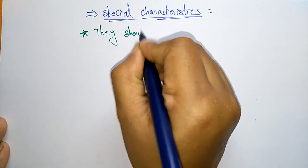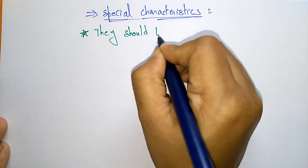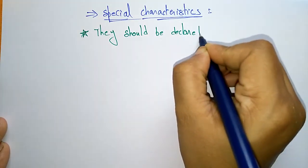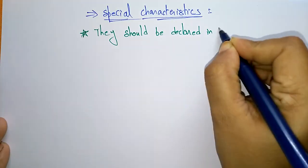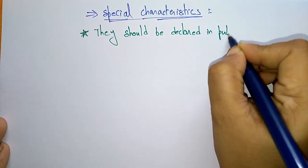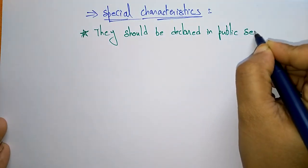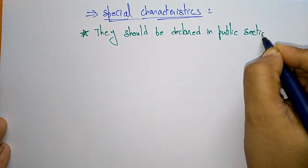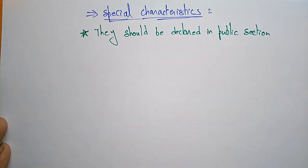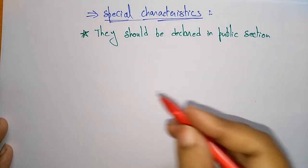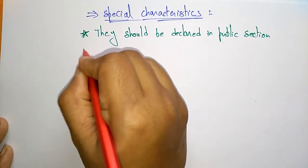The first characteristic is that constructors should be declared in the public section. If you want to declare a constructor, note that it must be declared only in the public section.